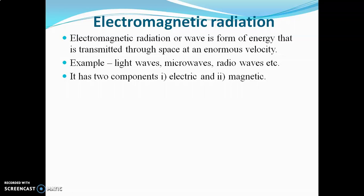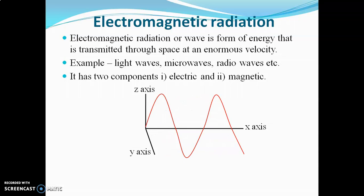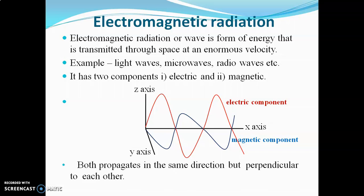Now we'll see how exactly this electromagnetic radiation looks. There are three axes: x-axis, y-axis, and z-axis. The electric component is parallel to the z-axis but perpendicular to the x and y-axes. The magnetic component is parallel to the y-axis but perpendicular to the z and x-axes. Both components travel in the direction of the x-axis and are perpendicular to each other and to the direction of propagation of the wave.